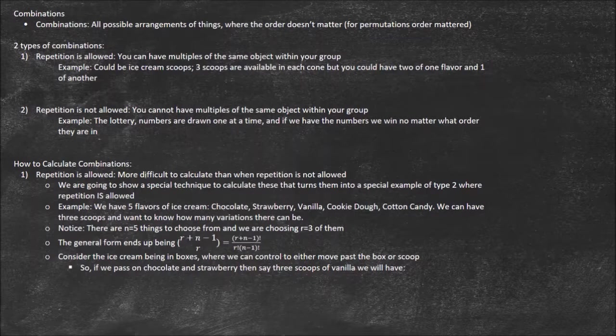An example is ice cream scoops. Three scoops are available in each cone, but you could have two of one flavor and one of another. That's an example where you'd use a combination with repetition, because you wouldn't care if you had a scoop on top and a scoop on the bottom that were the same — you'd just care that you had two scoops of chocolate and one scoop of strawberry, not the order they came in.